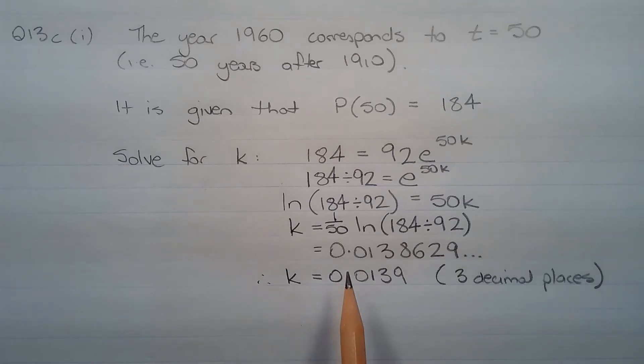So we have k = (1/50)ln(184/92), which equals 0.0138629 and so on. Therefore, k = 0.0139, correct to three decimal places.